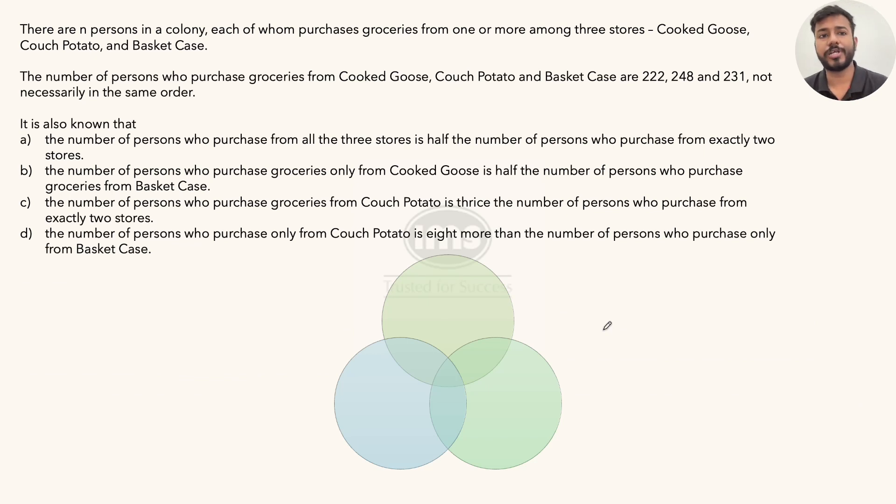Now, let's start solving this particular set. This says there are N persons in a colony, right? So total number of people we don't know. Each of whom purchases groceries from one or more among three stores: Cooked Goose, Couch Potato, and Basket Case.